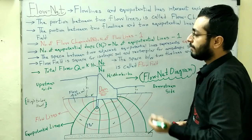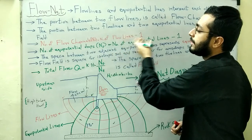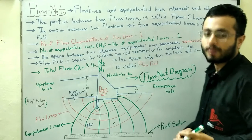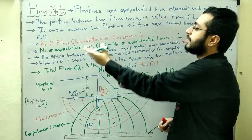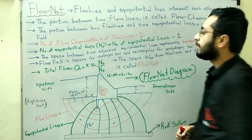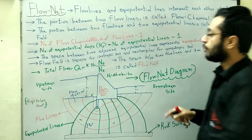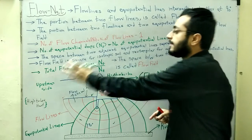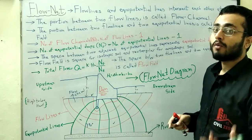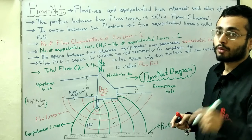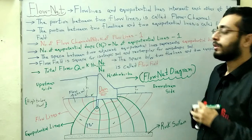In the formula Q = k × hl × Nf / Nd, Nf is the number of flow channels and Nd is the number of equipotential drops. This formula is used to calculate the total quantity of water flowing through the soil in numerical problems involving flow net.